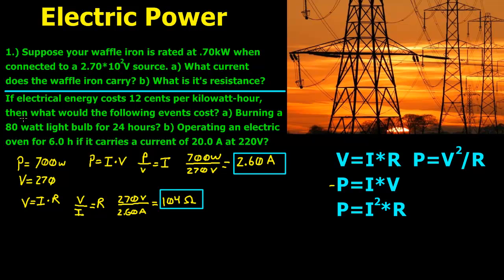For the second problem: if electrical energy costs 12 cents per kilowatt hour, what would the following cost? Part A is burning an 80 watt light bulb for 24 hours. The energy cost is $0.12 per kilowatt hour, and a kilowatt hour equals 1000 watts times one hour.